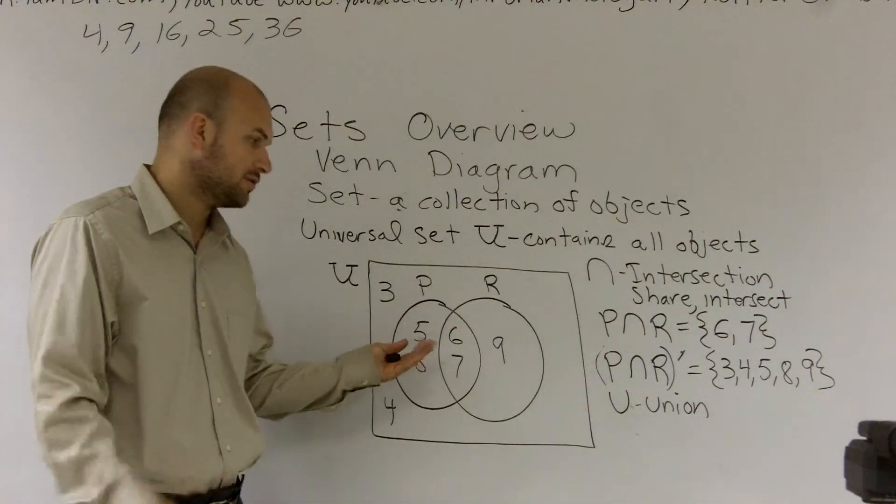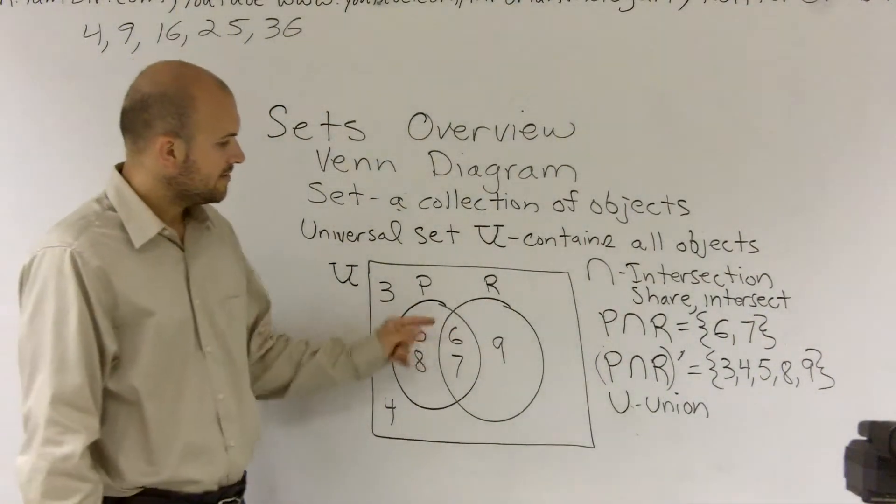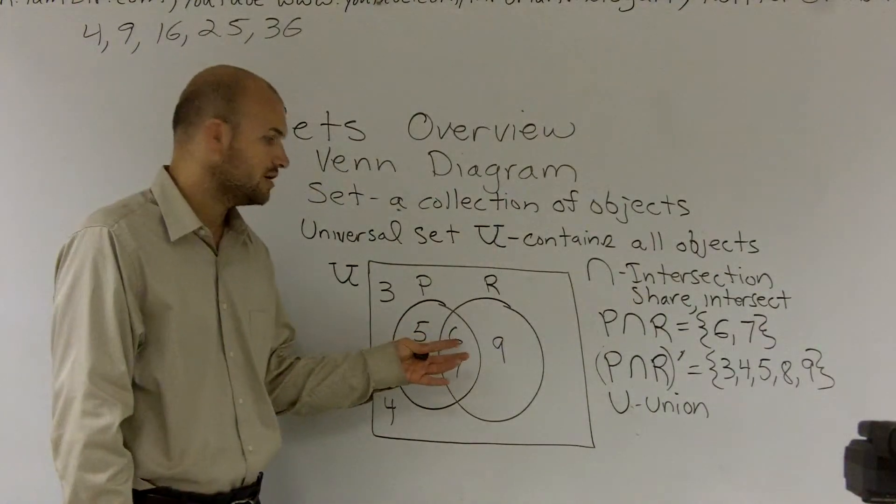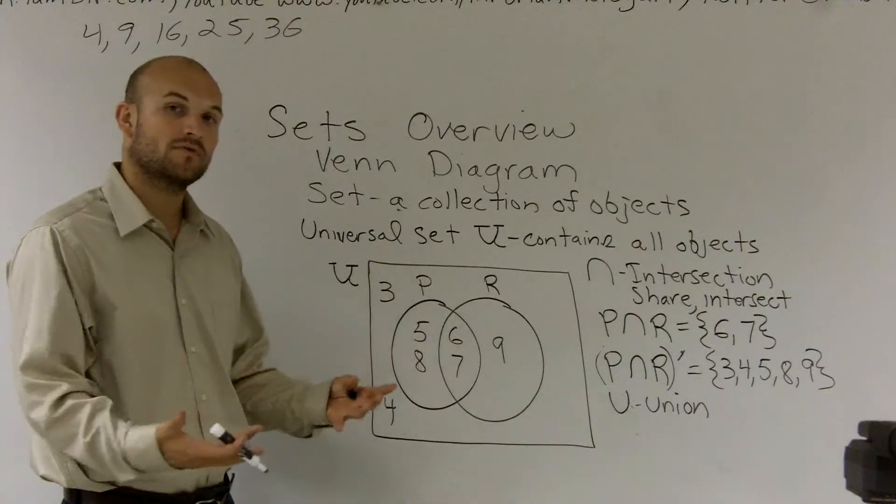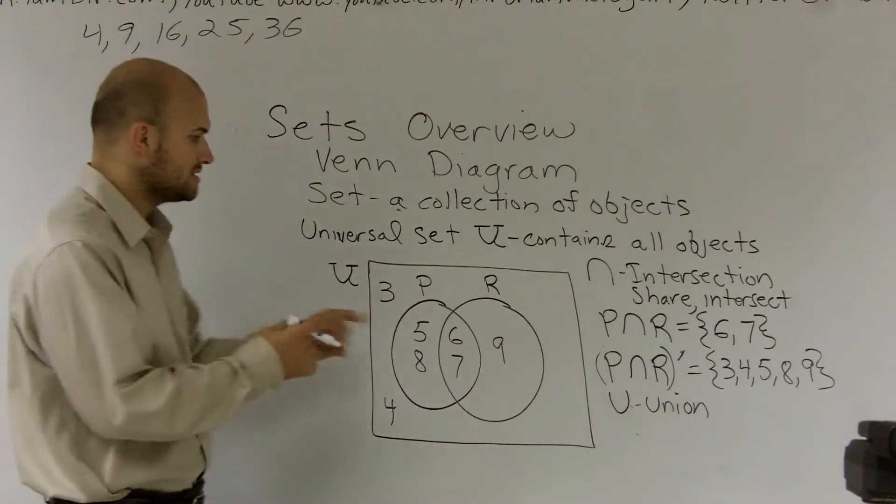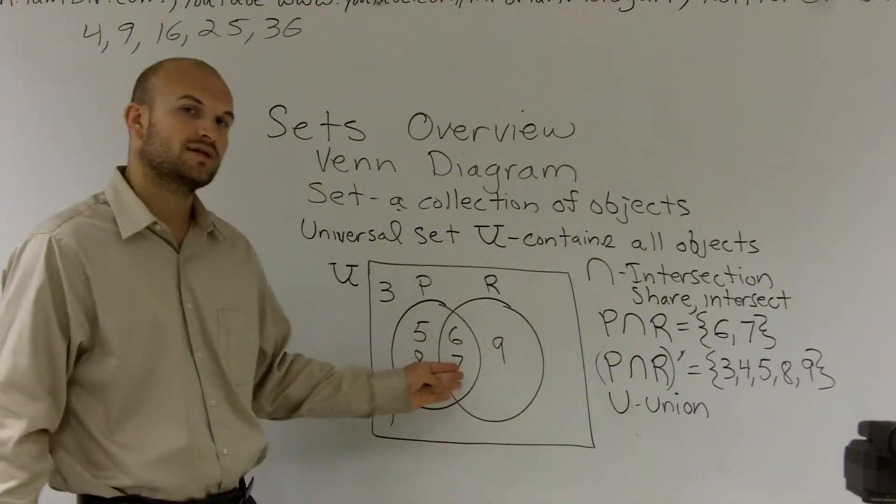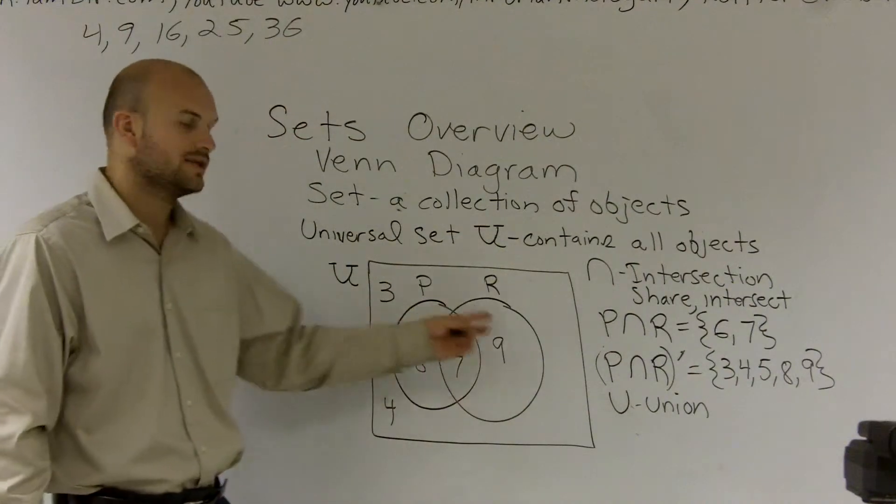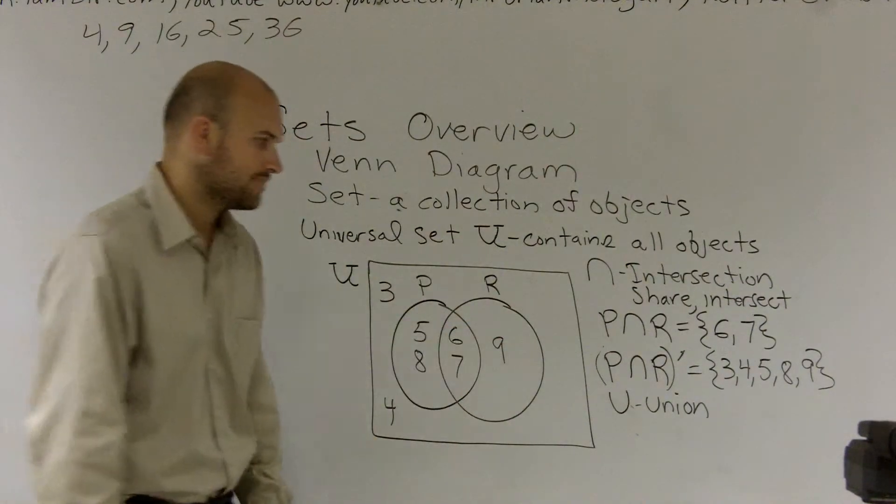Then I go ahead and take a look at 6. Is 6 in P, or is it in R? And yes, it's actually in both of them, but it is included in your union. So even though it's in both of them, intersection only deals with what's in both of them. But when you're dealing with union, it can be in one or the other, or it can also be in both of them.